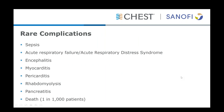There are a number of rare complications that can be seen with influenza. It is possible for patients with influenza alone to present with sepsis, though it's less common. Patients with influenza can develop acute respiratory failure and ARDS, which can progress fairly rapidly. Other tissues and organs can be involved, including encephalitis, myocarditis, pericarditis, rhabdomyolysis, and pancreatitis. Patients experience approximately a 0.1% mortality rate, or 1 in 1,000 patients.